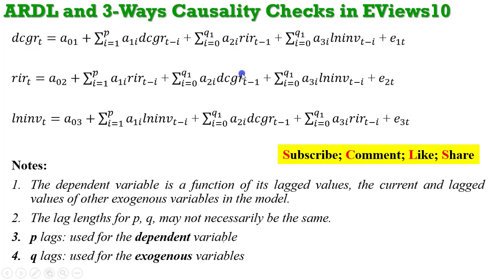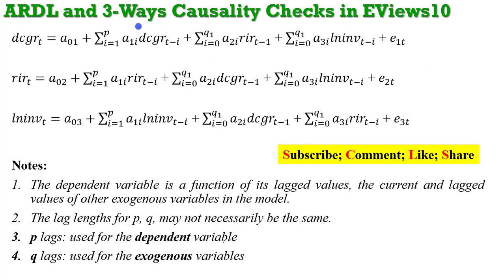Using the same analogy to explain bidirectional causality: after estimating the two equations, if the coefficient of real interest rate is statistically significant in the domestic credit growth equation and the coefficient of domestic credit growth is also significant in the real interest rate equation, then you can infer bidirectional causality. But if after estimating the two equations the coefficient of real interest rate is not significant and the coefficient of domestic credit growth is also not significant, then both variables exhibit independent causality — zero causality in the simplest form. When inferring causality, simply observe the statistical relevance of the coefficients.